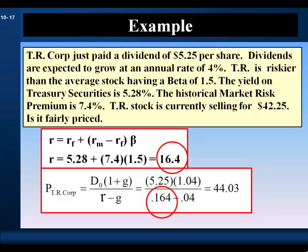So we divide next period's dividend by the 16.4% cost of capital minus the 4% constant growth in the dividend stream, and we get a price for TR Corp's stock of $44.03. It's currently selling for $42.25. The stock is underpriced, according to our calculations.